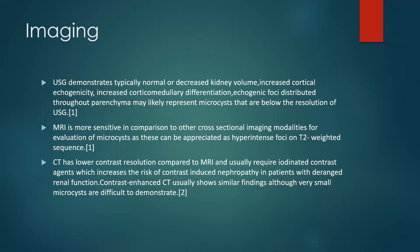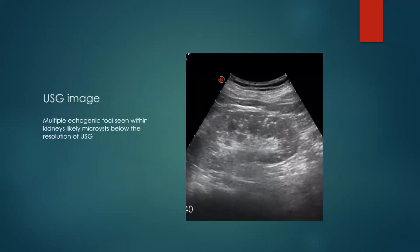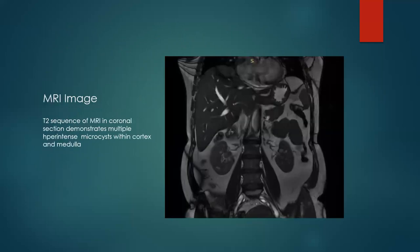CT requires iodinated contrast agent which increases the risk of contrast-induced nephropathy in a patient who already has deranged serum creatinine. This ultrasound image depicts hyperechoic foci distributed within the renal parenchyma representing microcysts below the resolution of ultrasound. This T2 sequence of MRI demonstrates microcysts in both cortex and medulla, seen as hyperintense foci.